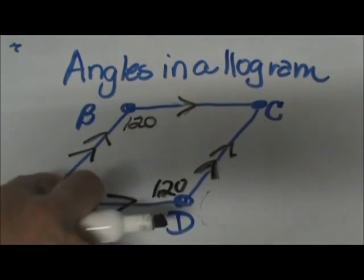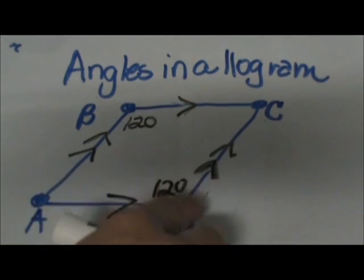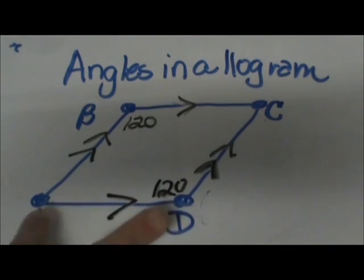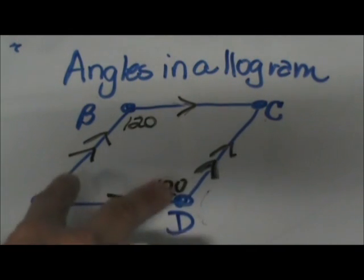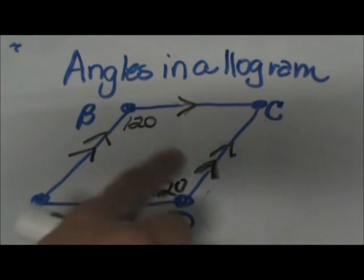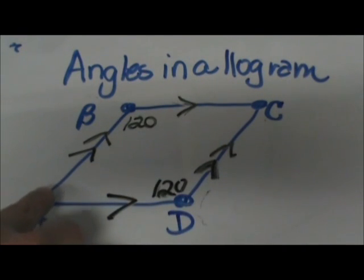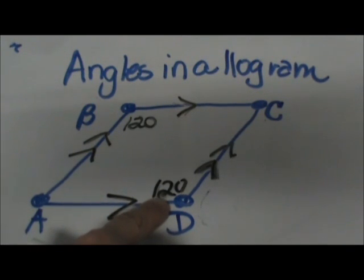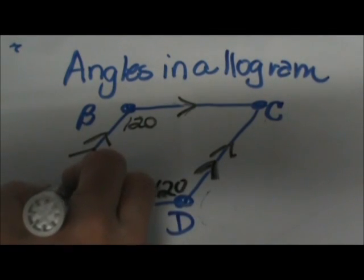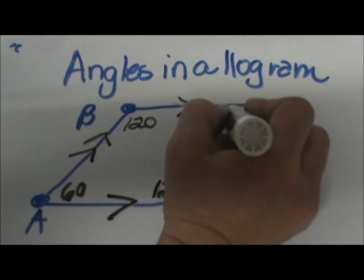A and C are congruent, but they have to have a relationship to D and B. The relationship is that these two consecutive angles are supplementary, meaning they add up to 180 degrees. If this angle is 120, then this angle has to be 60 and this angle is 60.